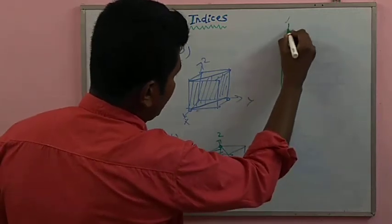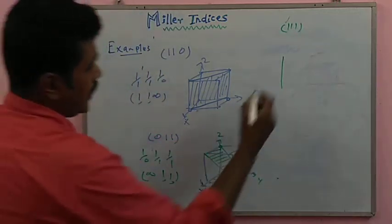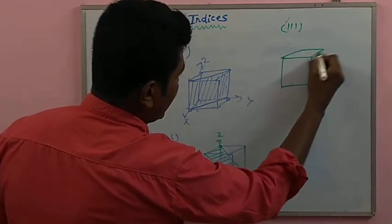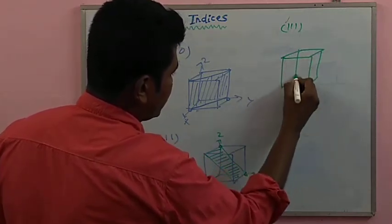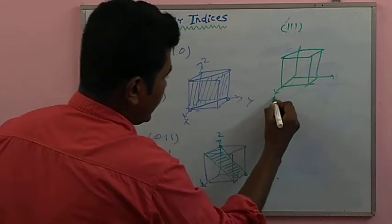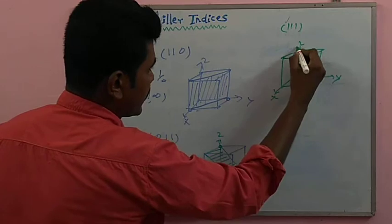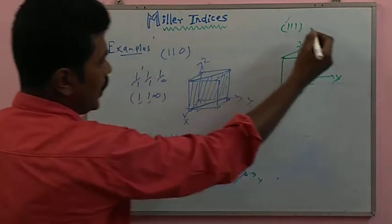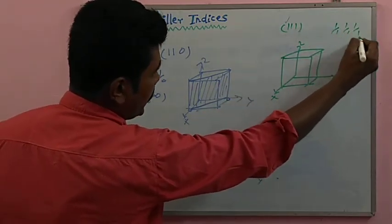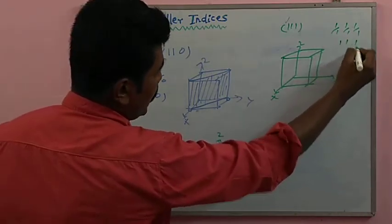Another plane structure: (1 1 1). In the cubic structure with x, y, and z axes, the reciprocals of 1/1, 1/1, 1/1 give 1, 1, 1. So all three axes have maximum distance of one unit.